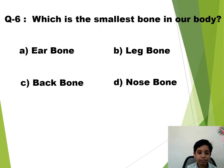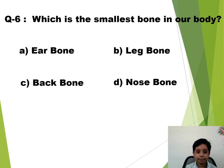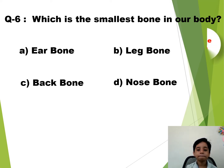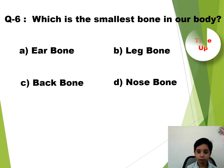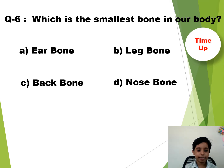Question number 6. Which is the smallest bone in our body? The time starts now. Time up. So the answer is A — Ear bone.